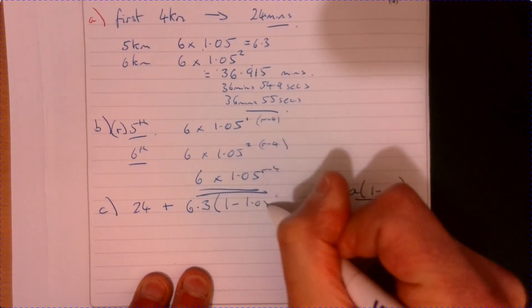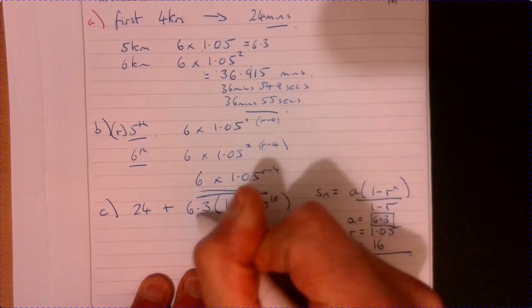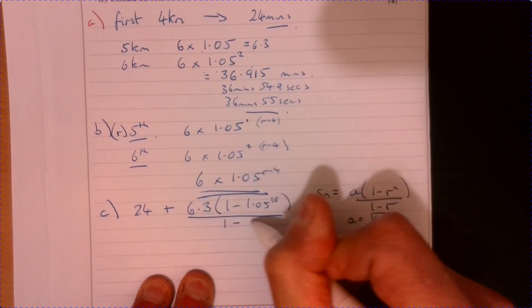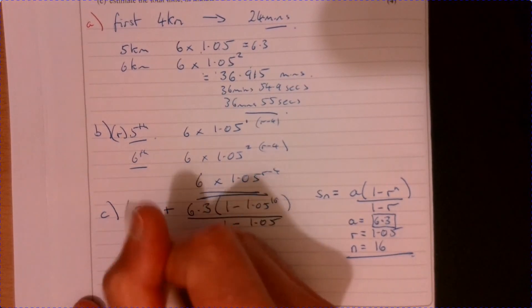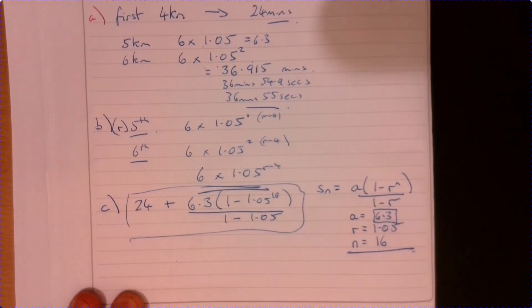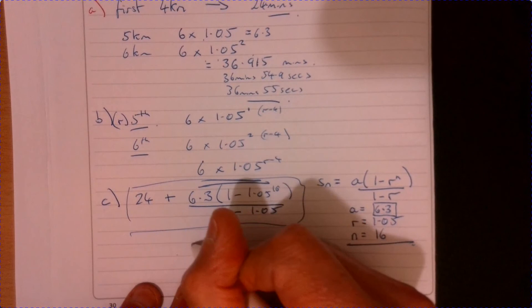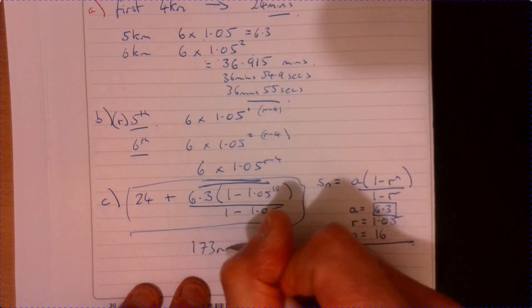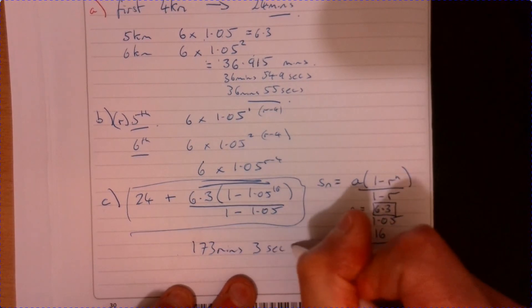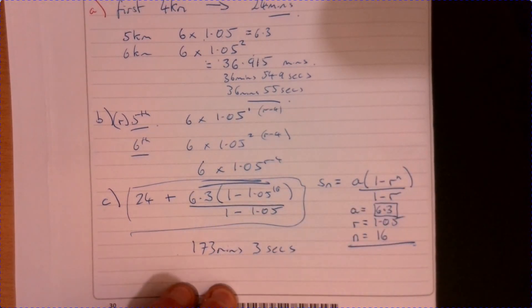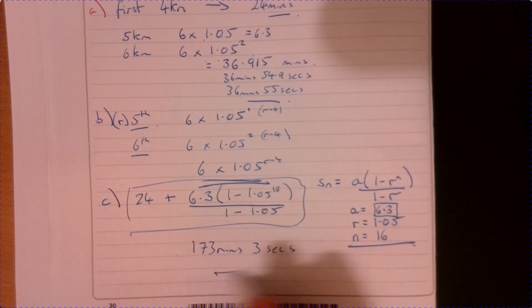So that's going to give us 6.3 times one minus 1.05 to the 16, and that's over one minus 1.05. And pop that in your calculator and you'll come out with 173 minutes. Make sure that you make the conversion back to seconds because obviously it'll give you a decimal answer. All right, there you are.